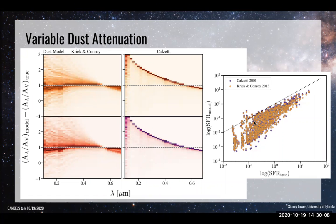This plot shows true star formation rate on the x-axis and inferred on the y-axis for two different attenuation curve models. There is not a huge difference in the inferred star formation rates even though there's a big difference in the inferred attenuation curve offset.